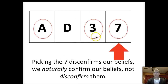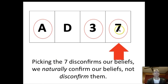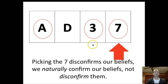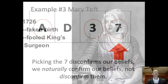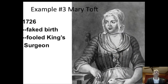Looking back at the Wason task — it's a little complex and abstract — the idea is that when you pick the seven, you're disconfirming your belief. We naturally want to turn over the A and the three because we want to confirm the rule. But we really should also want to turn over the seven.